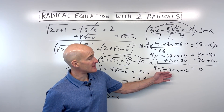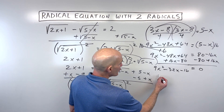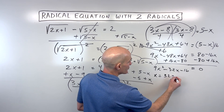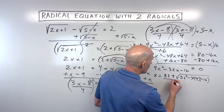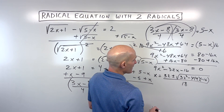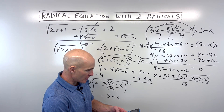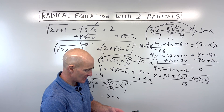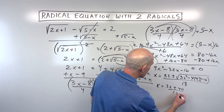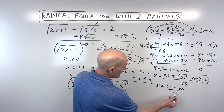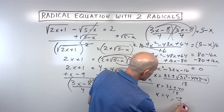We can factor this or use the quadratic formula. With numbers this large, the quadratic formula is easier: x equals the opposite of b, which is positive 32, plus or minus the square root of b squared minus 4 times a (9) times c (negative 16), all divided by 2 times a, which is 18. The discriminant is 32 squared minus 4 times 9 times negative 16 equals 1,600, and the square root of 1,600 is 40. So we get 32 plus 40 over 18, which is 72 over 18 equals 4, and 32 minus 40 over 18, which is negative 8 over 18 equals negative 4 ninths.